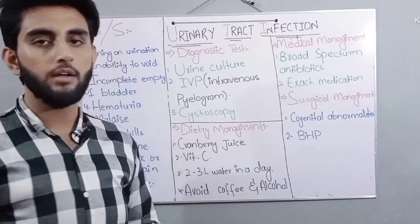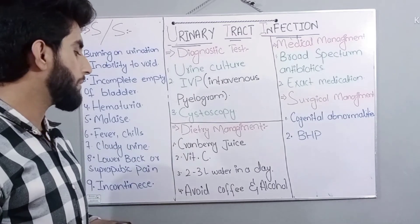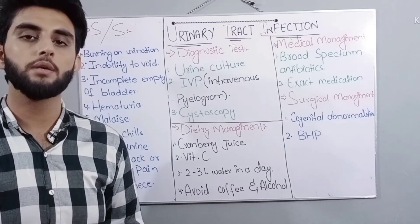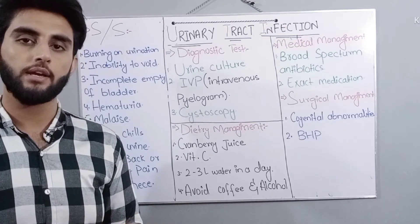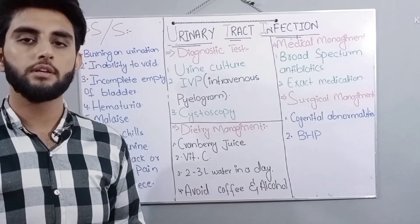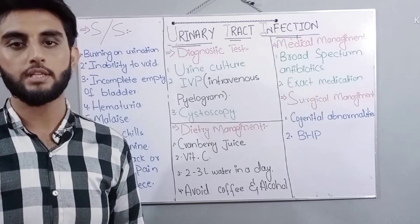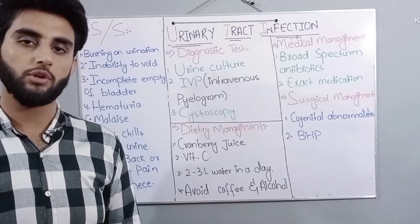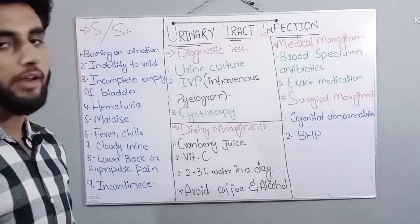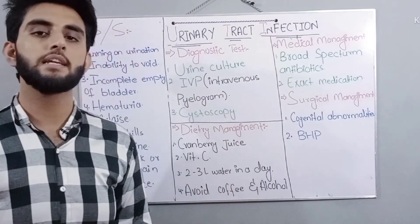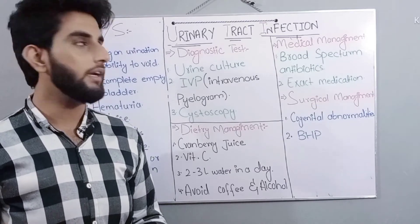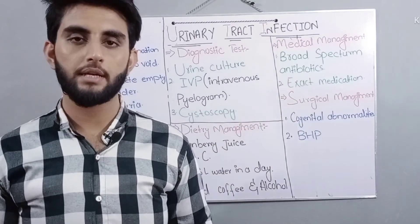For dietary management, patients should be advised to drink cranberry juice. They should also drink two to three liters of water per day so they urinate more frequently, which helps flush out the bacteria present in the urinary tract. Coffee and alcohol should be avoided because they can cause urinary irritation.